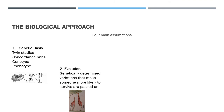The second assumption is evolution, including natural selection — genetically determined variations that make survival more likely are passed on. For example, a random genetic mutation allowed some giraffes to grow longer necks, letting them reach higher trees for more food. Those giraffes were more likely to survive and pass that trait on through generations.